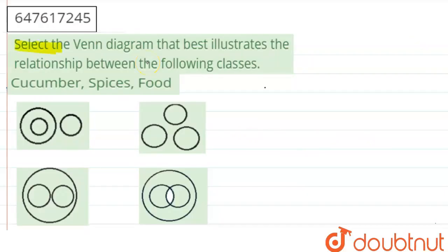Hello students, let's get started with our question. Select the Venn diagram that best illustrates the relationship between the following classes. The words that are given to us are cucumber, spices and food. And these are your four Venn diagrams, your four options over here.